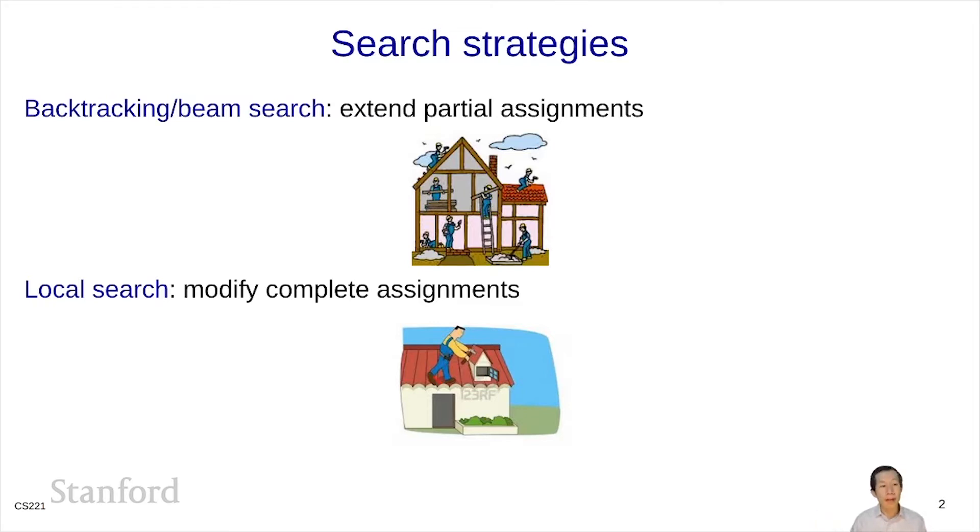One of the advantages of local search is that it gives you additional flexibility. You can pick any variable and try to improve it, whereas backtracking search and beam search you have to do things in a certain order. Beam search, once you've assigned a variable you can't go back, and backtracking search you can backtrack but you can't really backtrack out of order.